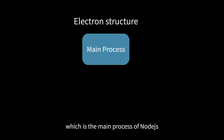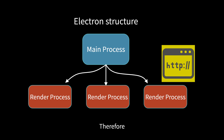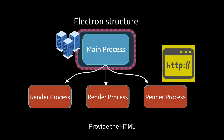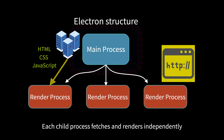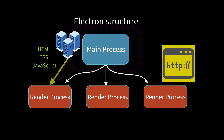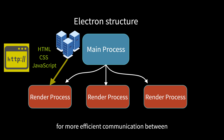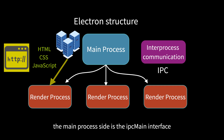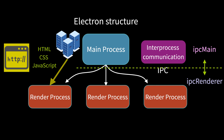In terms of specific structure, Electron has a default main process, which is the main process of Node.js. It can then create multiple child render processes for rendering. Each rendering subprocess is equivalent to a web page, so the main process plays the role of the server, providing the HTML, CSS, and JavaScript code required by the web page to the render process. Each child process fetches and renders independently. For more efficient inter-process communication beyond HTTP, Electron.js provides IPC. The main process side uses the IPC main interface, and the child process side uses the IPC renderer interface.